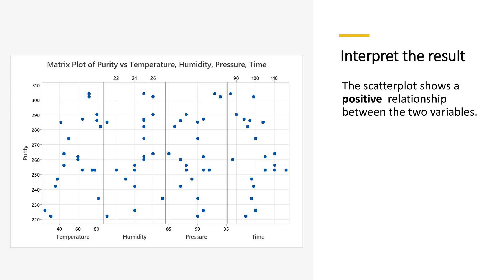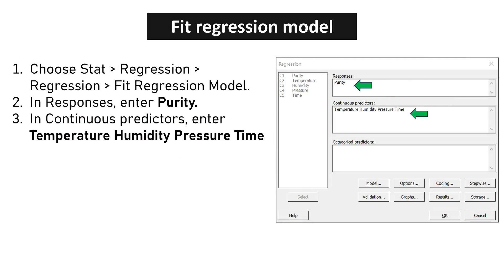Scatter plots are invaluable for discerning the nature of relationships between variables, indicating positive correlations at a glance. Fitting a regression model in Minitab involves specifying response and predictor variables, a foundational step in predictive analytics.